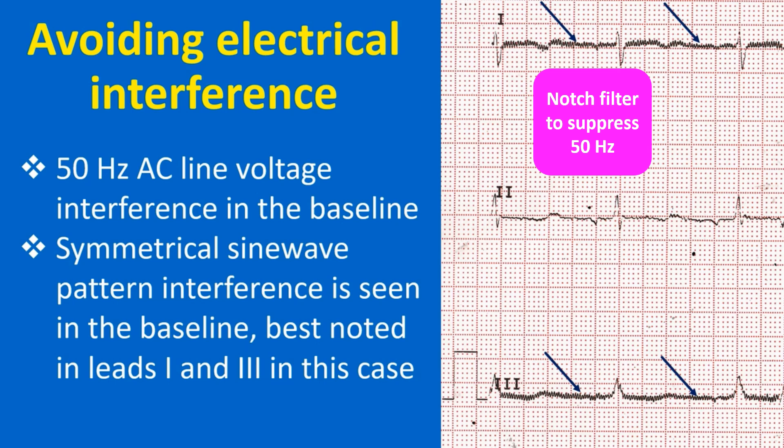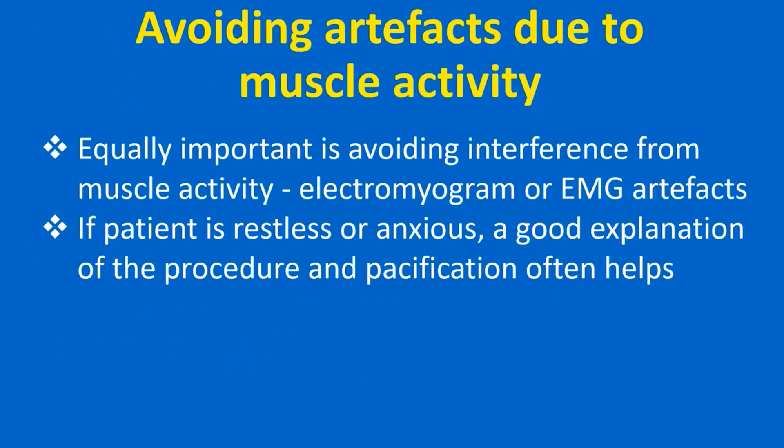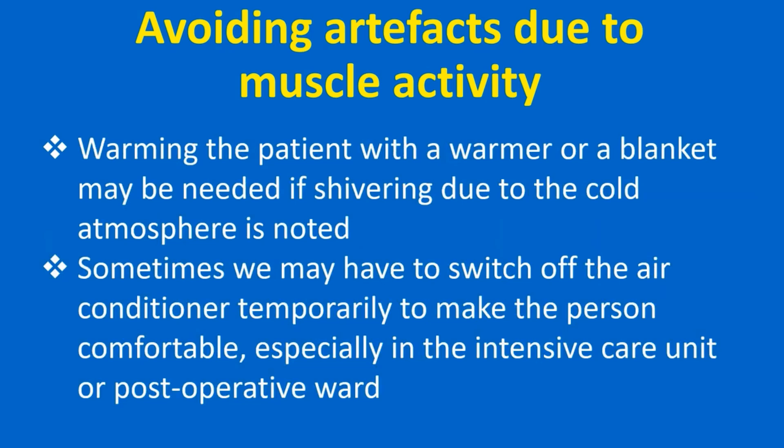In this ECG, AC interference is best noted in leads I and lead III. Equally important is avoiding interference from muscle activity — electromyogram or EMG artifacts. If the patient is restless or anxious, a good explanation of the procedure and pacification often helps. Warming the patient with a warmer or a blanket may be needed if shivering due to cold atmosphere is noted. Sometimes we may have to switch off the air conditioner temporarily to make the person comfortable, especially in the intensive care unit or post-operative ward.